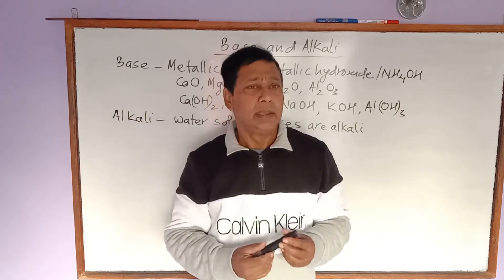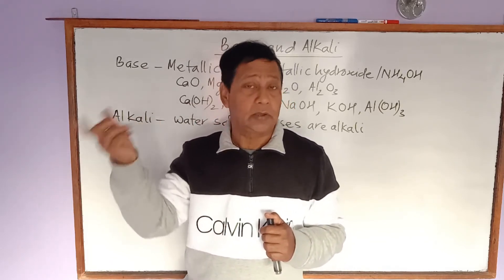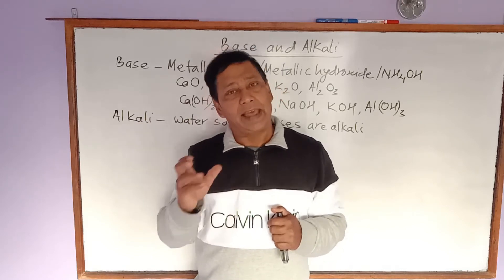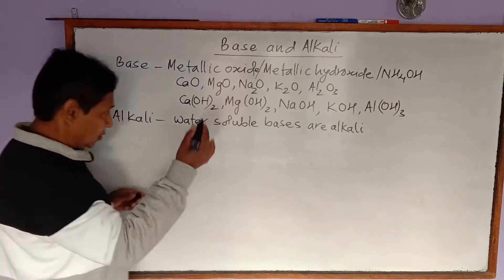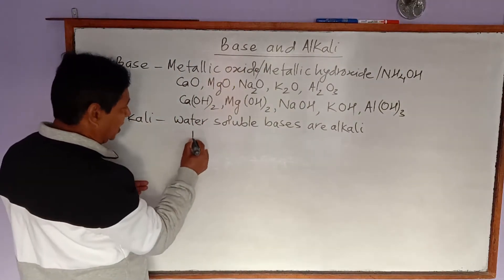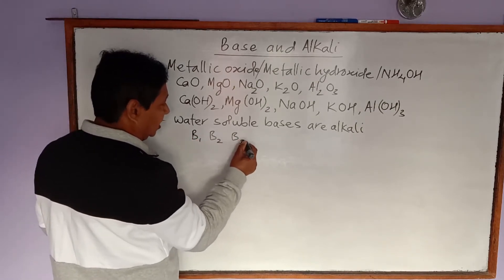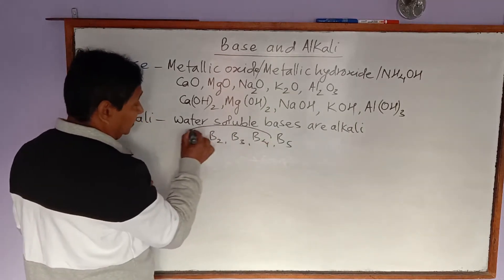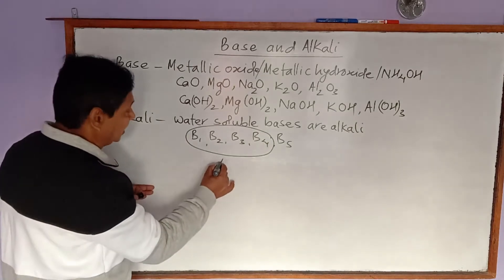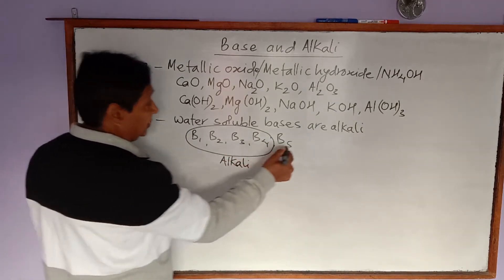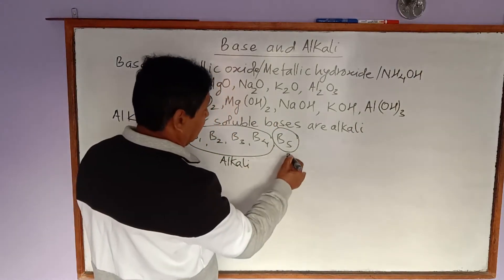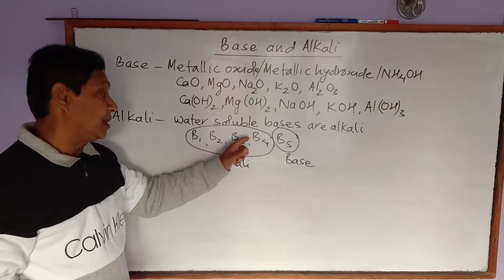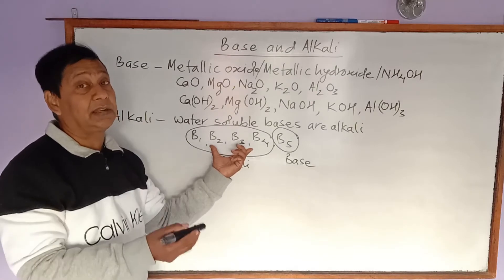The base which does not dissolve in water is called just a base — not an alkali. That's why all alkalis are bases, but all bases are not alkalis. For example, if we have bases b1, b2, b3, b4, and b5, and b1 through b4 dissolve in water, they are alkalis. But b5 does not dissolve in water, so it remains only a base. All of them are bases — metallic oxides or metallic hydroxides.